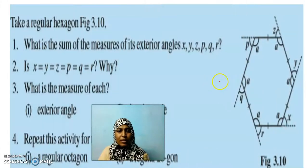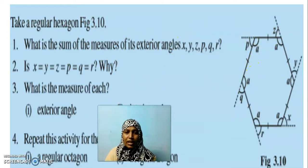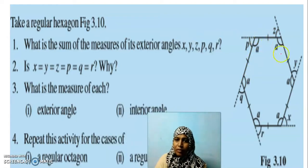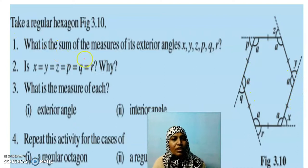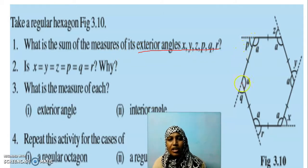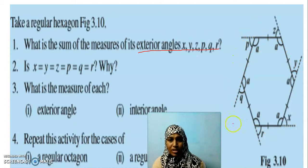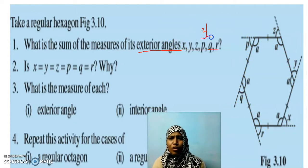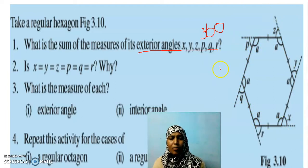Shall we move to problems based on this? Take a regular hexagon — they have said it is a regular hexagon. Regular means it is equiangular and equilateral; all the sides are equal. What is the sum of the measure of its exterior angles? How many exterior angles does this hexagon have? It will have 6 exterior angles taken along the same direction, and their sum will be equal to 360 degrees. Whether it is a regular or irregular polygon, the sum of exterior angles taken in the same order is always 360 degrees.